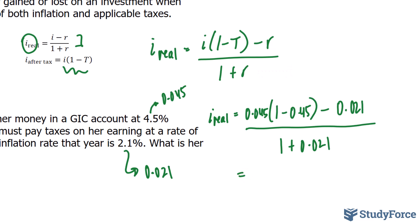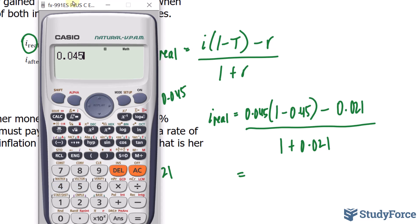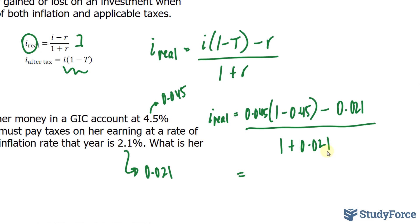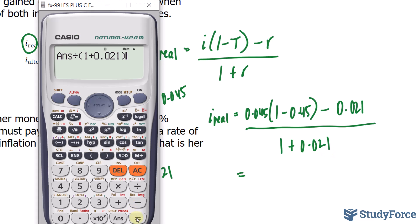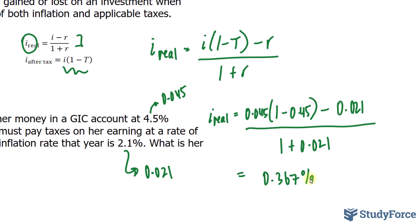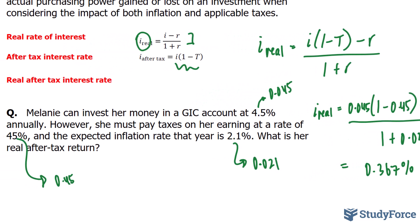Turning on our calculator: 0.045 multiplied by (1 minus 0.45), take away 0.021 — that outputs a value which we now divide by the denominator expression, which is 1 plus 0.021. Make sure that you place this entire expression in parentheses when you use your calculator, just as shown. We end up with a value written in scientific notation, so when we multiply this value by 100%, it will start to make more sense.